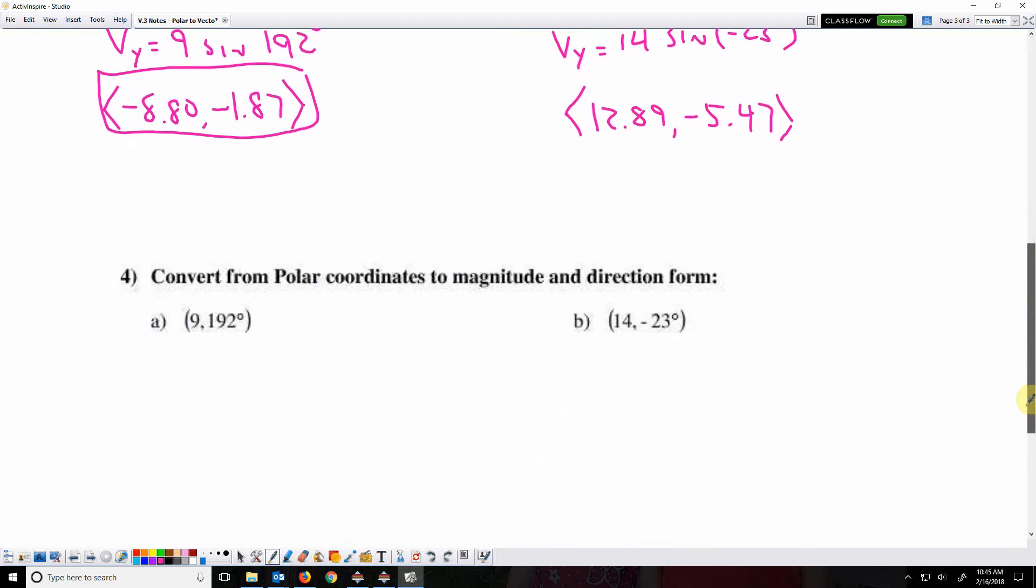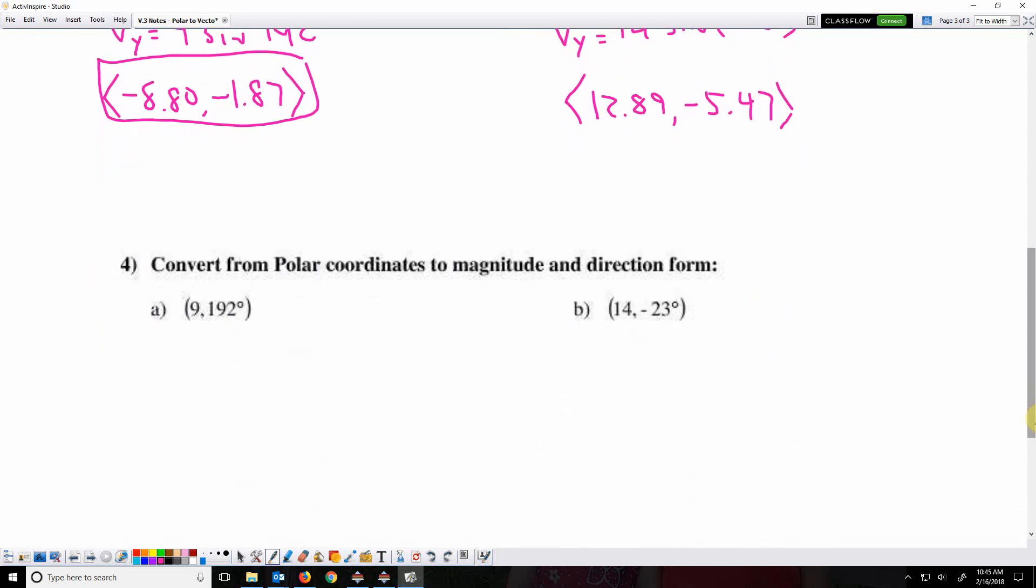And last, we are going to convert from polar coordinates to magnitude and direction form, which means in the end we want to just write magnitude equals, direction equals.